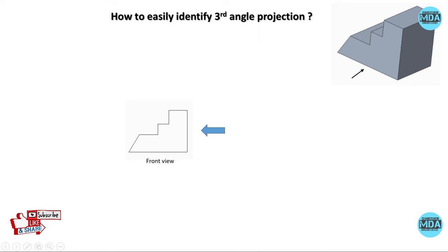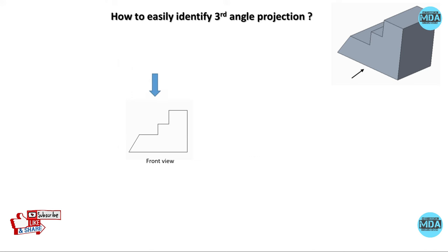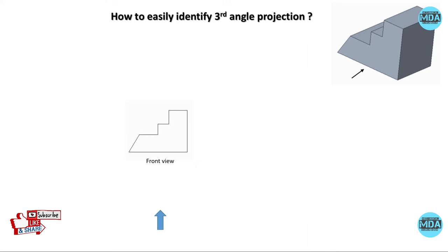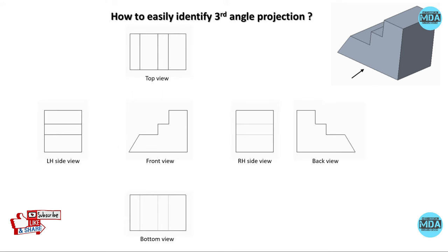If you are looking from the right side, you will get the view on the right side only. Viewing from the right side and placing the view on the right side — this is the third angle projection. Similarly, viewing from the top side gives you the view on the top, and viewing from the bottom side gives you the view on the bottom. In this way you can easily identify the third angle method of projection.